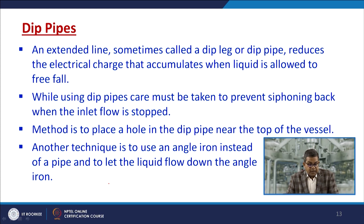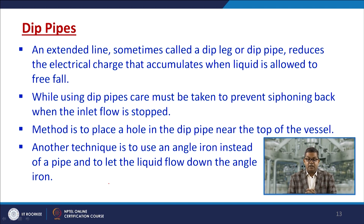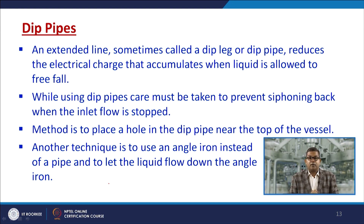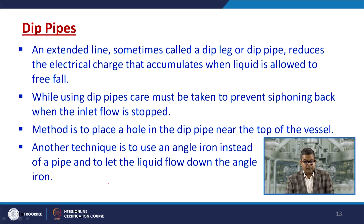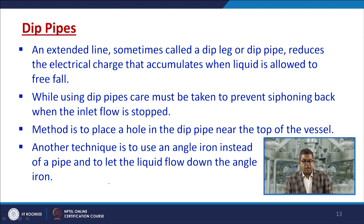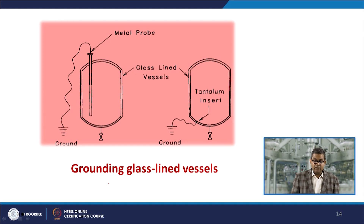The dip pipe — also called a dip lag — is an extended line that reduces electric charge accumulation when liquid is allowed to free fall. When using a dip pipe, care must be taken to prevent siphoning back when inlet flow is stopped. One method is to place a hole in the dip pipe near the top of the vessel to break the siphon. Another technique is to use an angled iron instead of a dip pipe and let the liquid flow down along it.